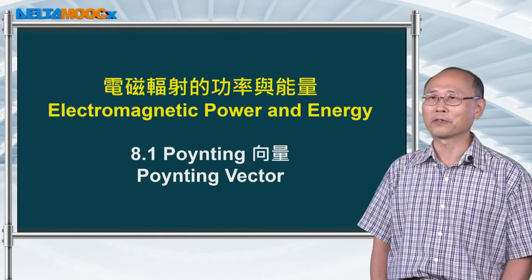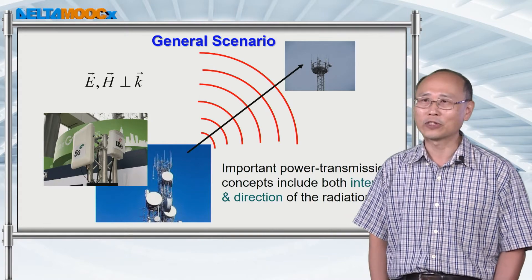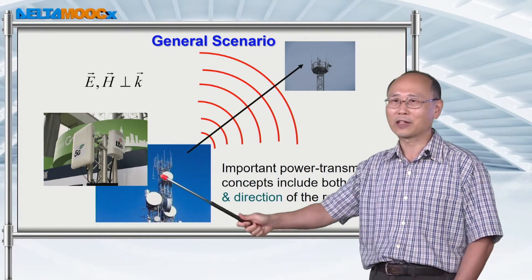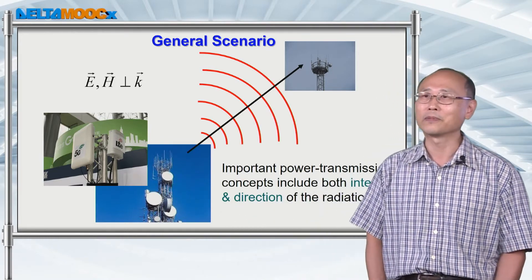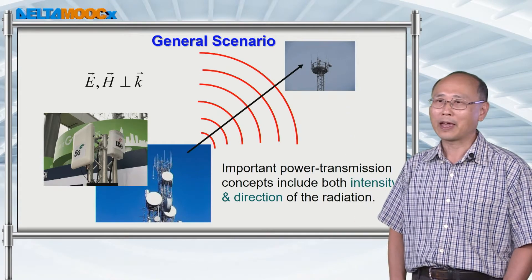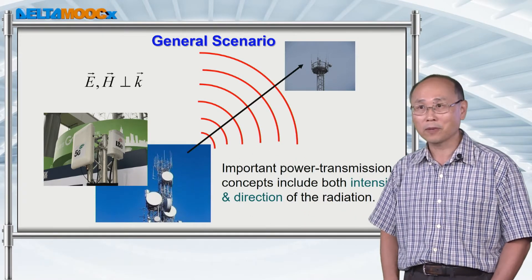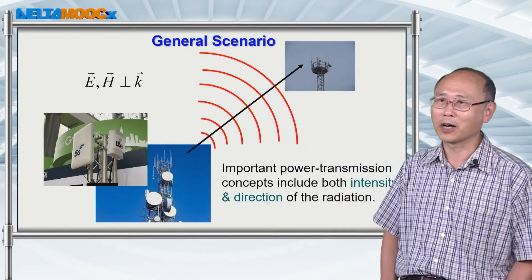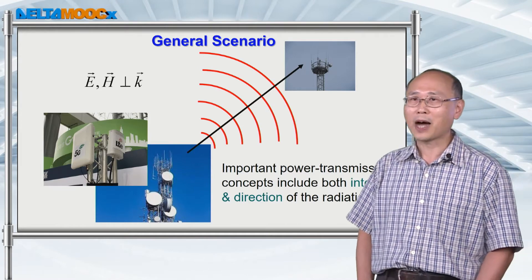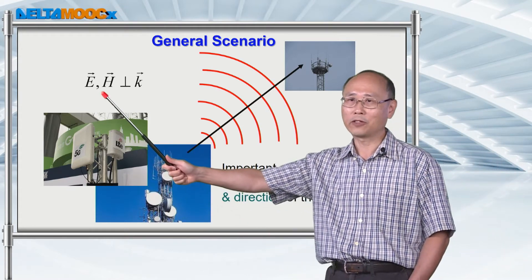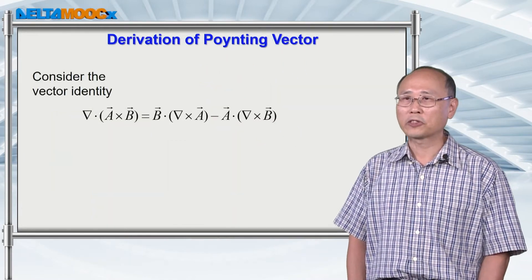The first topic is the Poynting vector. Consider a general scenario for transmission and reception of electromagnetic radiation: a transmitting antenna somewhere on the ground or in the air, and a receiving antenna placed far away. To receive the electromagnetic wave, you need to know both the intensity and direction of the radiation. If you place the receiving antenna in the wrong direction, you might not detect much signal. So we have to model the problem using both electric and magnetic fields.